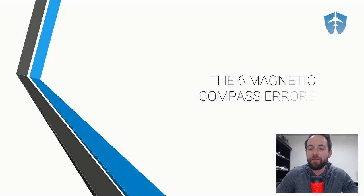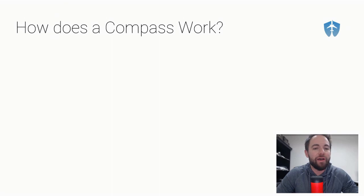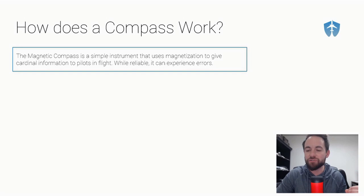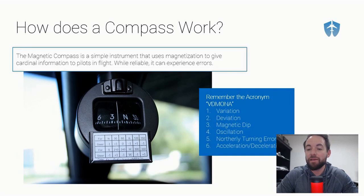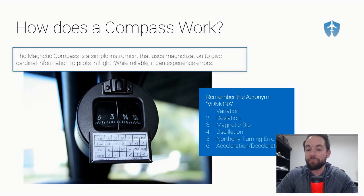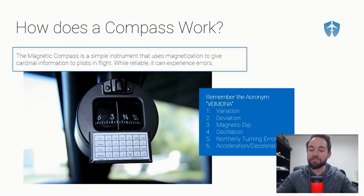Hello students, my name is Nate with Wi-Fi CFI. Welcome back to another quick Training Tuesday tip. Today we're going to be talking about the six magnetic compass errors. Before we jump into the errors, let's talk about how the compass works. It's a very simple instrument that uses magnetization to give cardinal information — heading information — to pilots. The acronym to remember for the compass errors is VD MONA.